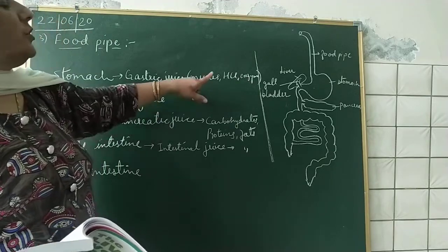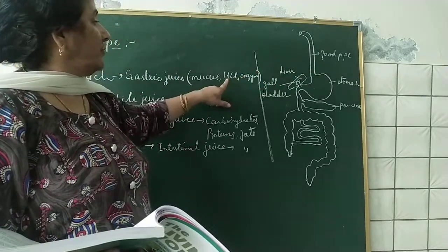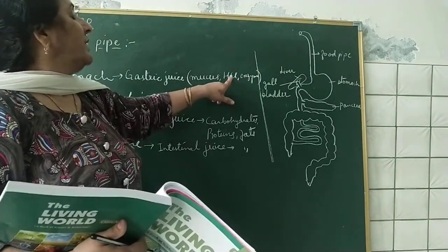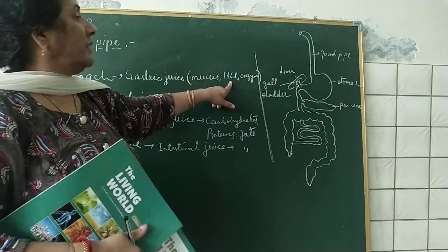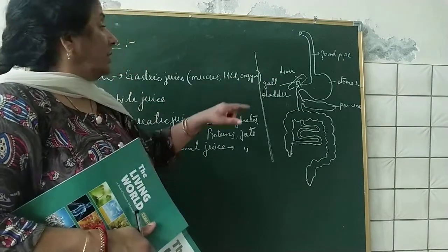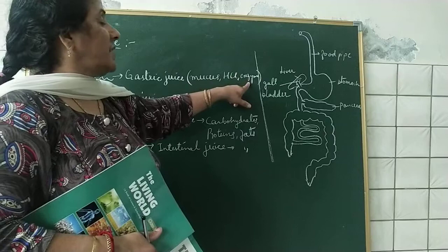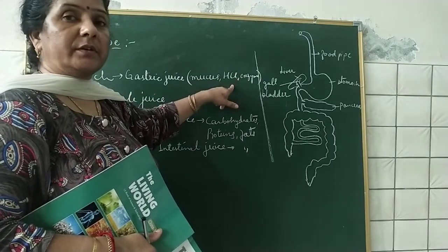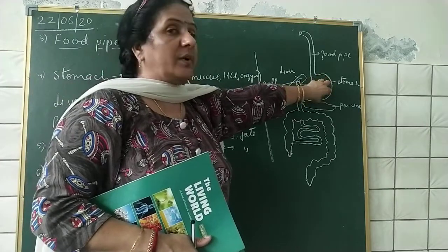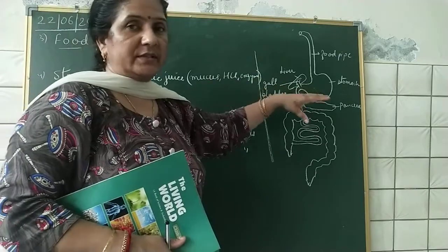Mucus protects the inner lining of the stomach from the action of acid. Hydrochloric acid kills the germs present in the food. Also, it makes the food acidic so that enzymes can act on it. So our stomach also plays a very important role in the process of digestion.